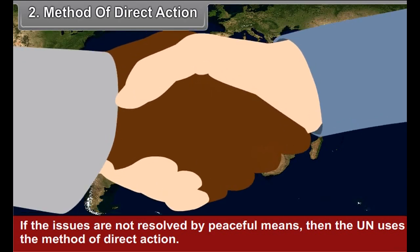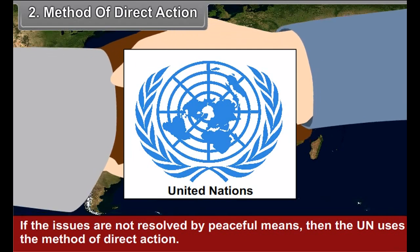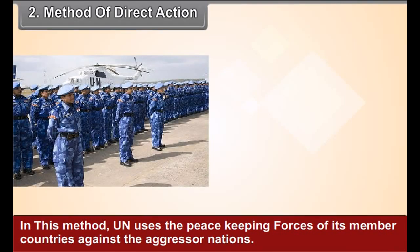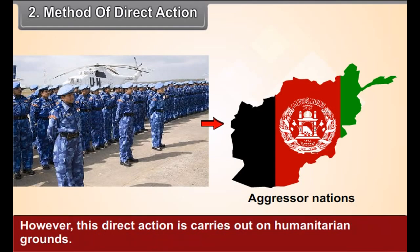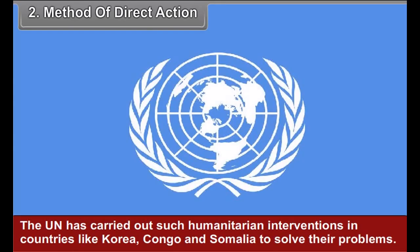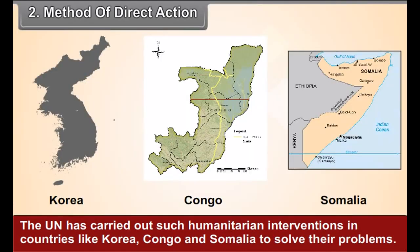2. Method of Direct Action: If the issues are not resolved by peaceful means, then the UN uses the method of direct action. In this method, the UN uses the peacekeeping forces of its member countries against the aggressor nations. However, this direct action is carried out on humanitarian grounds. The UN has carried out such humanitarian interventions in countries like Korea, Congo and Somalia to solve their problems.